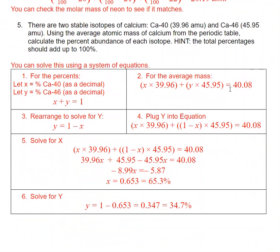Now, number five is a little bit tricky, but you have to realize here that you're trying to solve for two things. You're trying to solve for percent of calcium-40, and then percent of calcium-46. So anytime you're trying to solve for two things, that usually means two equations. So you're going to solve this using a system of equations. So for the percents, we're going to let x be the fractional percent of calcium-40, and y be the fractional percent of calcium-46.